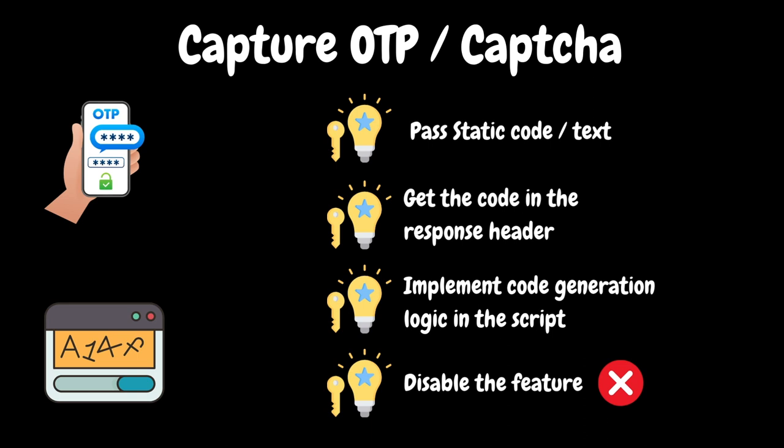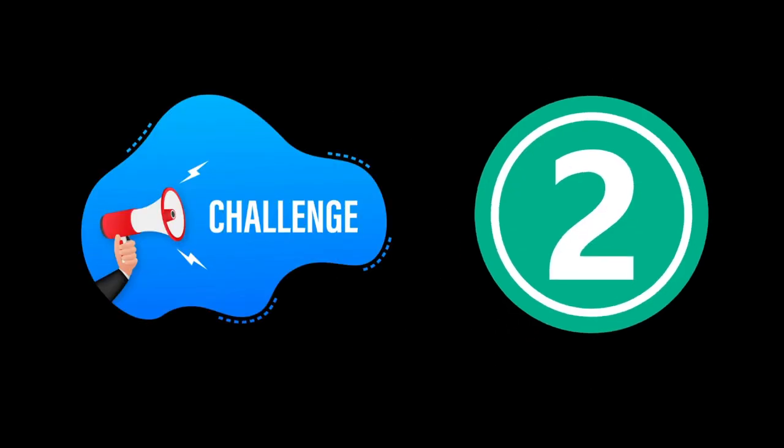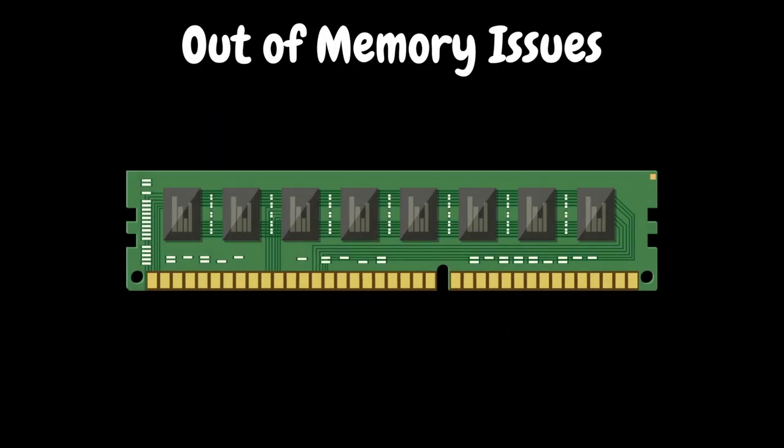If you have no option and you implement this approach, then in the performance test plan review meeting you should highlight and document the risk. The outcome will depend on the approval from the project team.